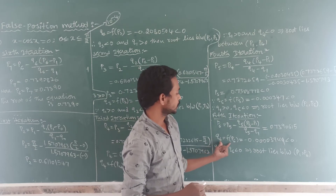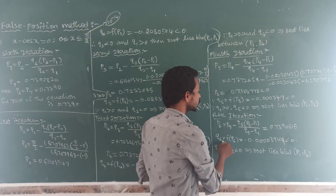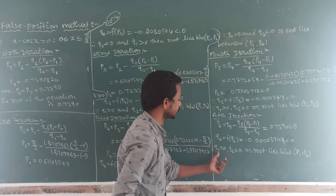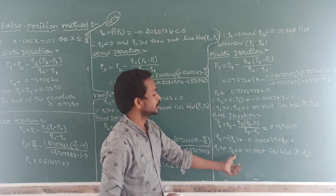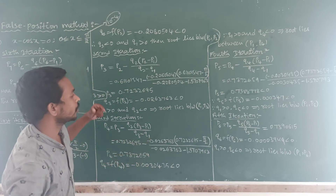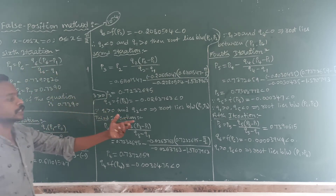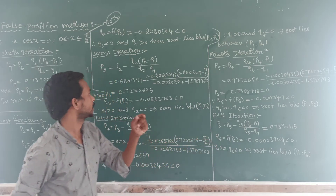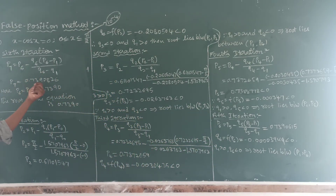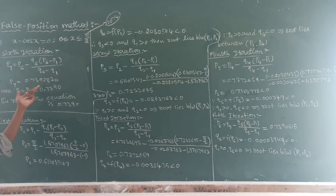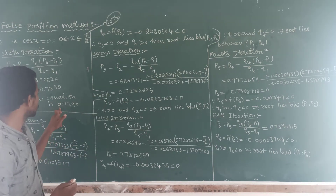We find Q6 = f(P6), which is also less than zero. Q1 and Q6 are both less than zero — wait, Q1 is greater than zero and Q6 less than zero — opposite signs. The root lies between P1 and P6. For the sixth iteration: P7 = P6 − Q6 × (P6 − P1) / (Q6 − Q1). Substituting all values, we get P7 = 0.7390. Comparing P7 and P6, both equal 0.7390 — four decimal places match. Therefore the root of the given equation is 0.7390.